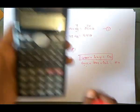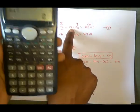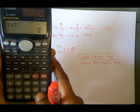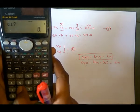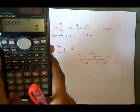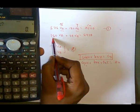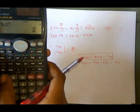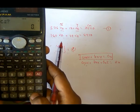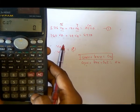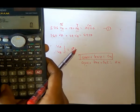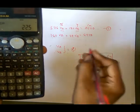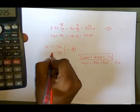Press equals. It asks for b1, which is 180. Then press equals and enter c1, which is 25110, and press equals. It then asks for a2, which is 180. Enter b2 as 72, and c2 as 8910, then press equals.